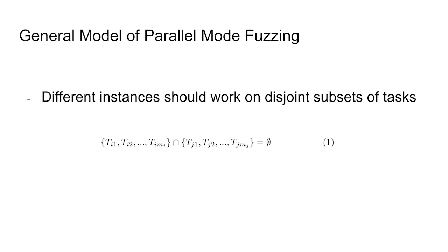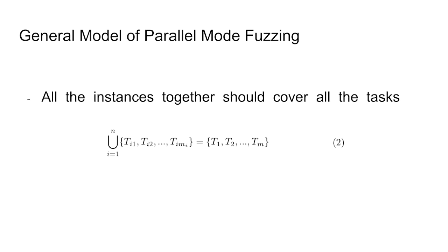At the beginning, we propose a model to describe parallel fuzzing. The model is inclusive of the parallel mode in existing fuzzing tools, and it is general enough to apply to other solutions of parallel fuzzing. It has three properties. The first one is that different instances should work on disjoint subsets of the tasks. This is to avoid overlap and increase the extent of concurrency. The second one is all the instances together should cover all the tasks. Otherwise, the pursuit of parallel fuzzing can cause the loss of certain task cases. Essentially, it means the code that can be covered by those task cases.